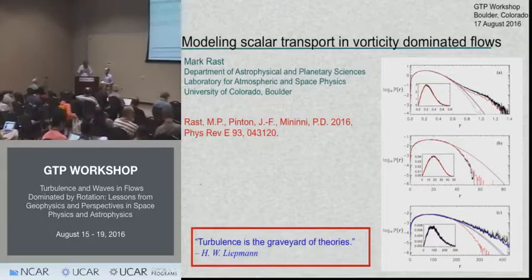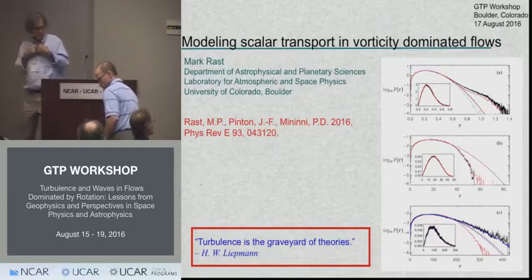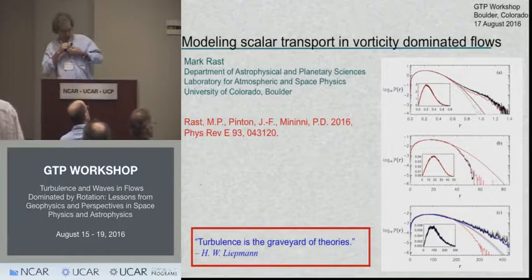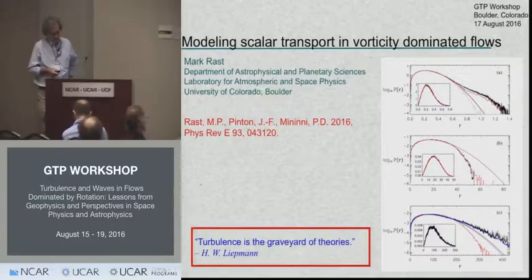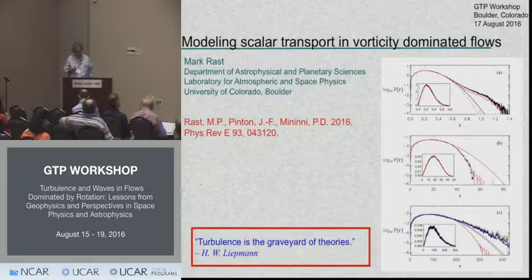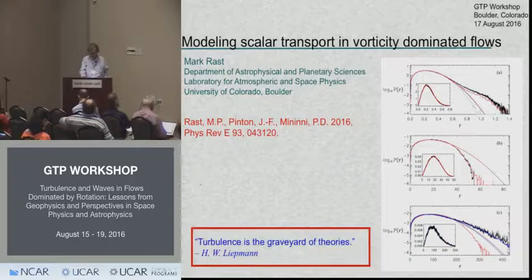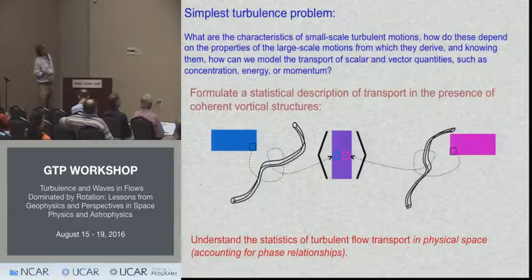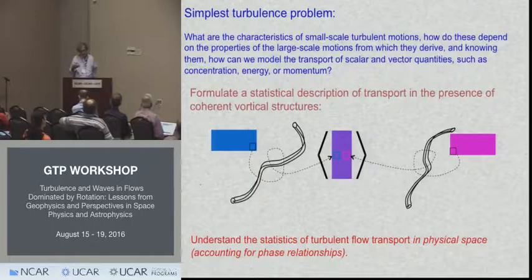The second speaker introduces a talk on what they think is maybe the simplest turbulence question: scalar transport, and in particular scalar transport in a purely vertical model flow. The question is: if we have a flow and can characterize it with some statistics, can we formulate a transport model for scalar and vector quantities based simply on flow statistics that we can hope to measure, using properties of the flow in physical space rather than spectral space?